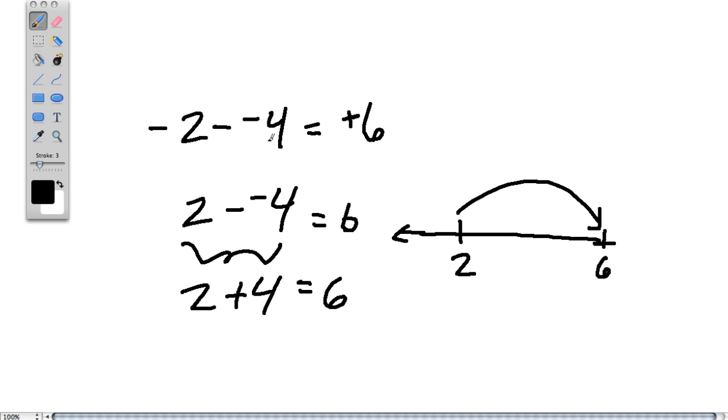Negative 2 minus negative 4, this is not 6. Let's look at what it is. We start at negative 2 now. Here's negative 2. Well, taking 4 away would tell us to go to the left in the negative direction, but we're in fact taking negative 4 away, so we go in the opposite direction. We hop up four units,